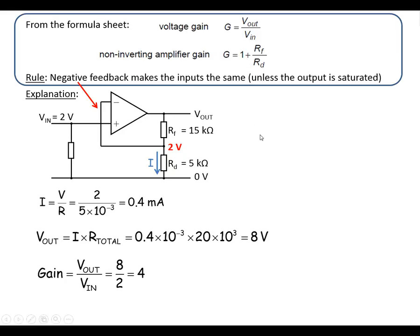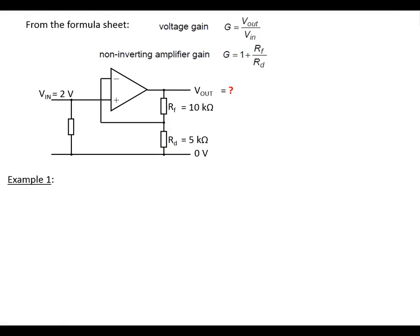We're going to go through 4 examples now. So you might be asked in the exam: you've got V in, you've got the 2 resistors, what's V out going to be? So what we do is we use the formula here, 1 plus RF over RD. We just plug in the numbers. We've got 10k divided by 5k, and that gives us 2. Add the 1, that gives us a gain of 3.